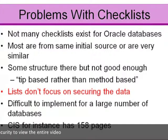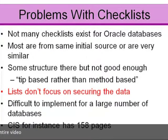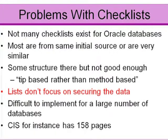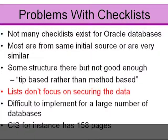The Center for Internet Security Benchmark, for instance — version 3 — has something like 154 to 158 pages, depending on how you've printed it out, whether you're using the page numbers from the PDF or the actual page numbers, which is really irrelevant. Each page has got a number of checks in it — maybe there are 300 to 400 checks in this document.